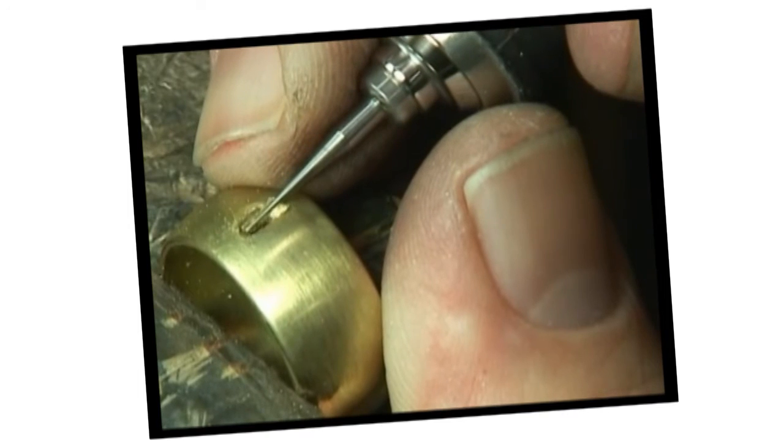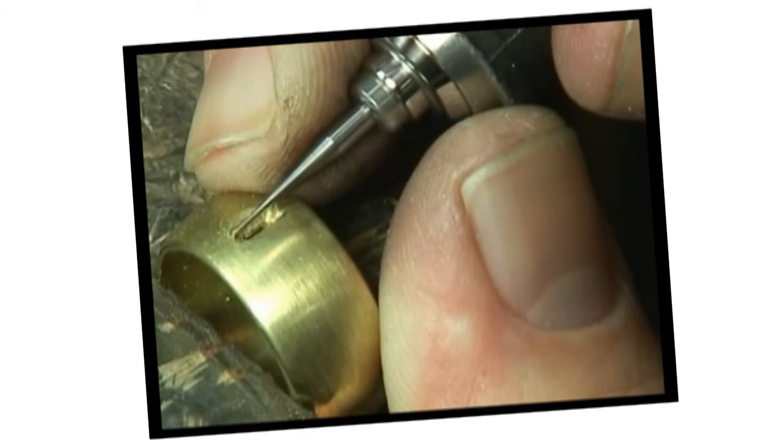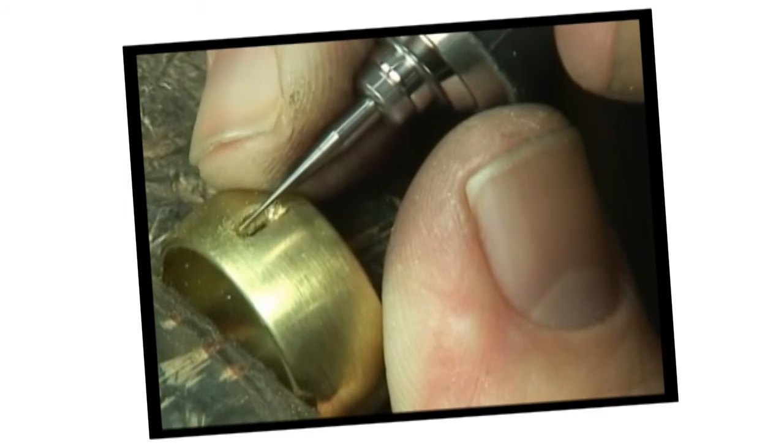Then using a small ball burr, start cleaning up the corners, removing the metal at the girdle line and creating a seat in the corners.